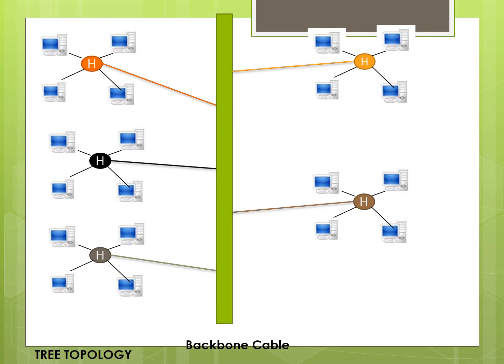The entire structure of tree topology is similar to a tree — the backbone cable forms the stem of the tree and the groups of computers form its branches. We can connect n number of branches. All computers are given equal importance. If one computer fails, the network is not affected. If a secondary hub fails, other hubs and computers continue working. But if the backbone cable fails, the entire network will shut down.